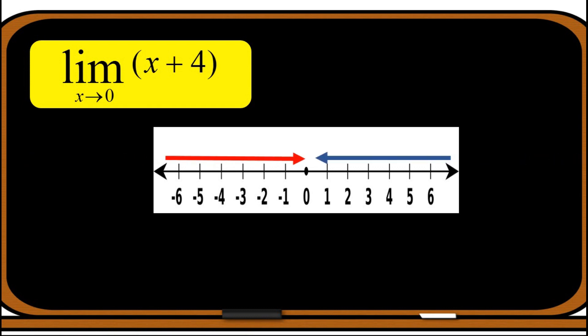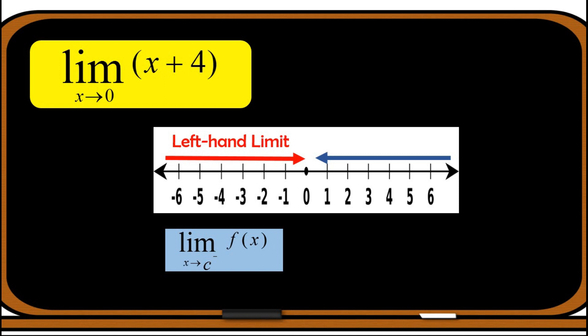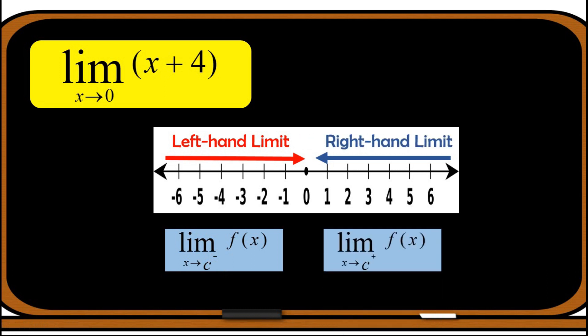Let us first consider approaching 0 from its left, or through values less than 0. The limit that we get from left going to 0 is what we call the left-hand limit, represented by the limit of f of x as x approaches c from the left using the negative symbol. And from the right going to 0, it is called the right-hand limit, using the limit of f of x as x approaches c from the right using the plus sign.